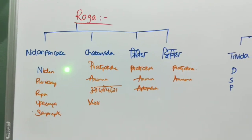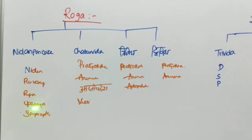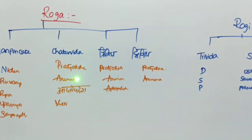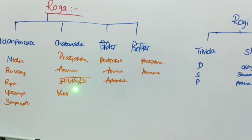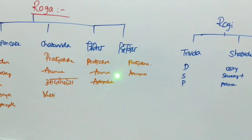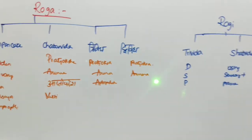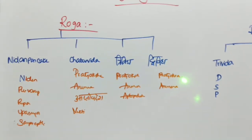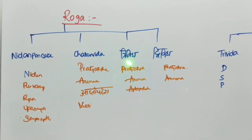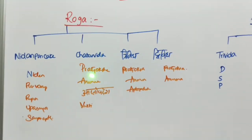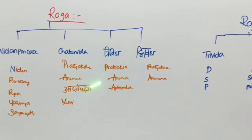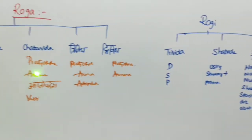To summarize Roga Pariksha: through Nidana Panchaka — Nidana, Purvarupa, Rupa, Upashaya, and Samprapti; through Cheturvidha Pariksha — Pratyaksha, Anumana, Aptopadesha, and Yukti; through Trividha Pariksha — Pratyaksha, Anumana, and Aptopadesha; and through Dvividha Pariksha — Pratyaksha and Anumana. If we add Aptopadesha to Dvividha it becomes Trividha; if we add Yukti to Trividha it becomes Cheturvidha. Nidana Panchaka is a separate concept.